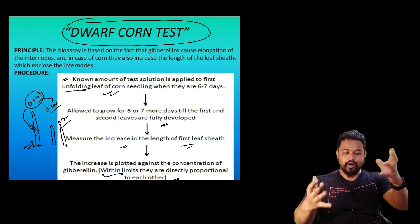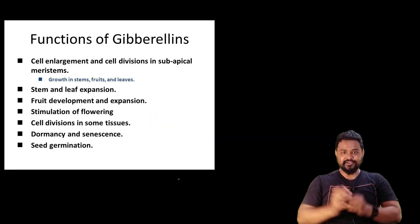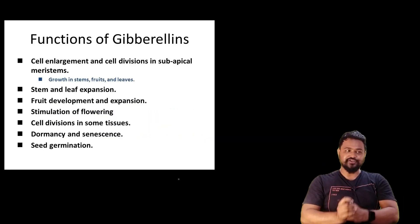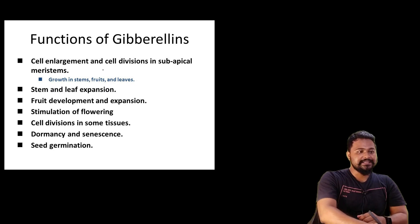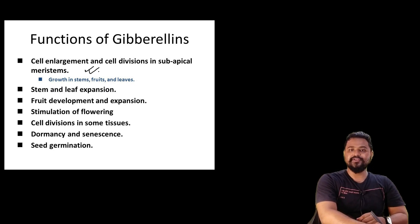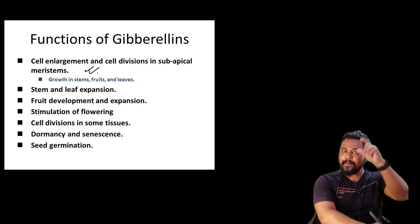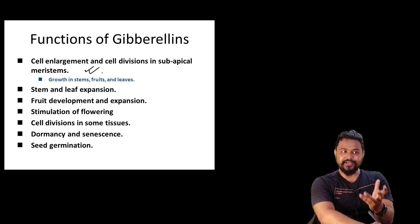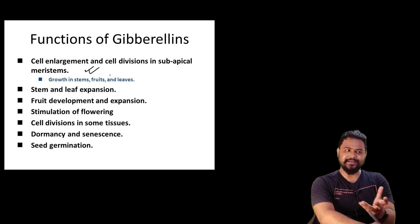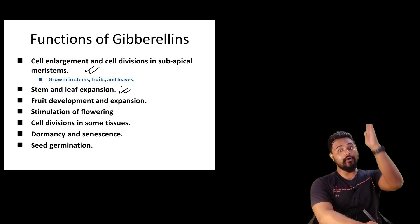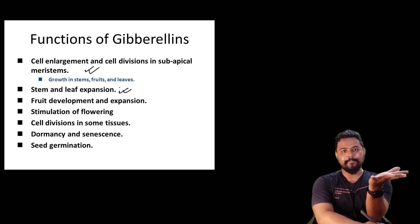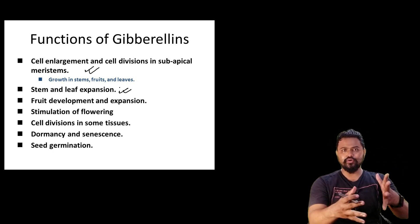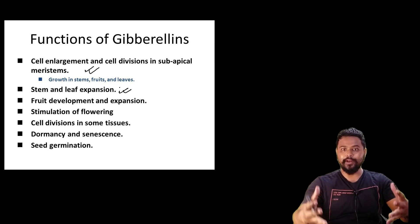Simple experiment — the dwarf corn test. Finally, the functions: cell enlargement and cell division in the sub-apical region. The apical region is not sub-apical; it means the nodes and internodes. Stem and leaf expansion — stem elongation and leaf expansion. It means that Gibberellin causes elongation.